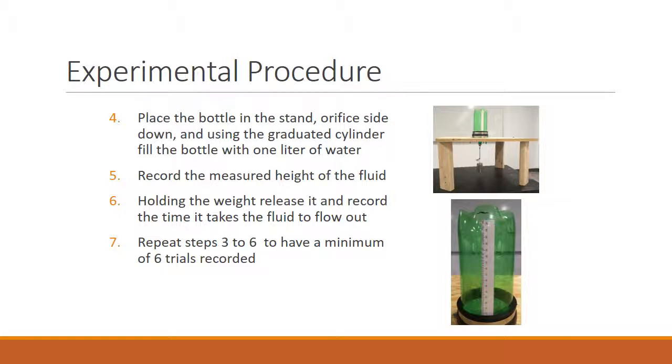Once the stopper is in, place the bottle and the weight into the rubber gasket on the stand, inserting the weight first and then the bottle. This gasket will hold the bottle firmly in order to eliminate any movement and external forces. Once in place, using the graduated cylinder, fill the bottle with the amount of fluid to be tested. This bottle can test a maximum capacity of 1.8 liters.